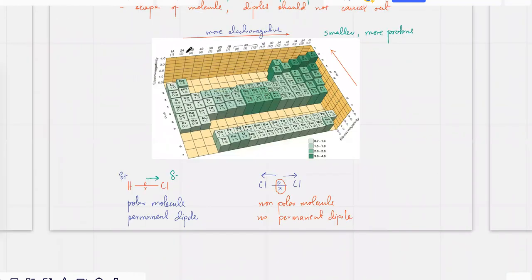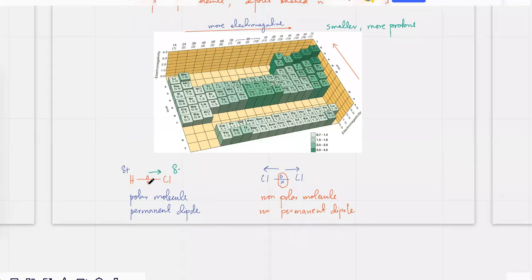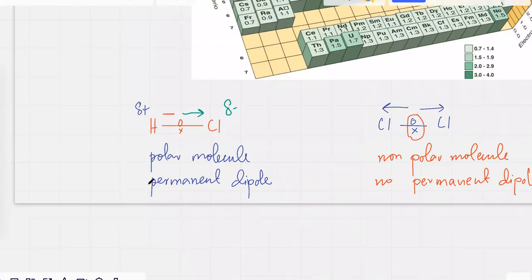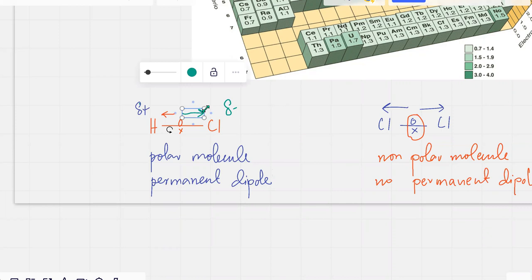A dipole is going to be formed when you have an electronegativity difference. In a covalent molecule, why do they share electrons? Because both atoms are trying to pull electrons — the H is trying to pull electrons, the Cl is also trying to pull electrons, so the electrons get stuck in the middle. But if one atom has a stronger attraction for electrons, like Cl being more electronegative, the electrons would be kind of closer to Cl — just slightly closer — so it's going to have a slight negative charge and the other one a slight positive charge.